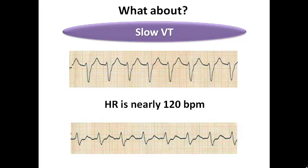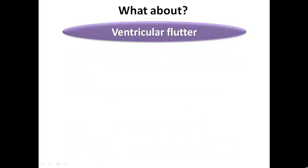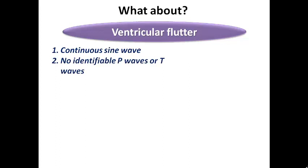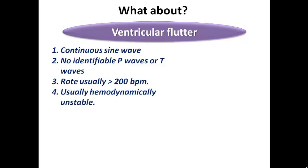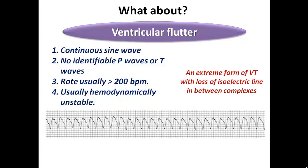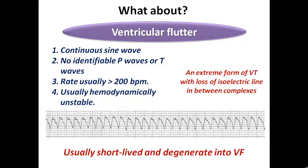Ventricular flutter is an uncommon terminology you need to recognize. It means a continuous sine-wave pattern of ventricular rhythm with no identifiable P waves or T waves, at an extremely high rate — usually more than 200 bpm — causing hemodynamic instability. Like atrial flutter with no isoelectric line between flutter waves, ventricular flutter has no isoelectric line between complexes. It is usually short-lived and degenerates into VF. Immediate DC shock is required.